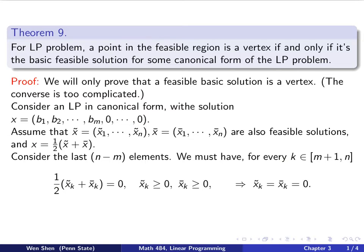So this means that for every k bigger than m, I have the following: half of x tilde k plus x bar k is 0, for every k. And then we also know this is a feasible solution, meaning x tilde k is bigger than 0, x bar k is bigger than or equal to 0. So these two are two non-negative quantities, and they add up to be 0, and the only possible solution is that they are both 0.